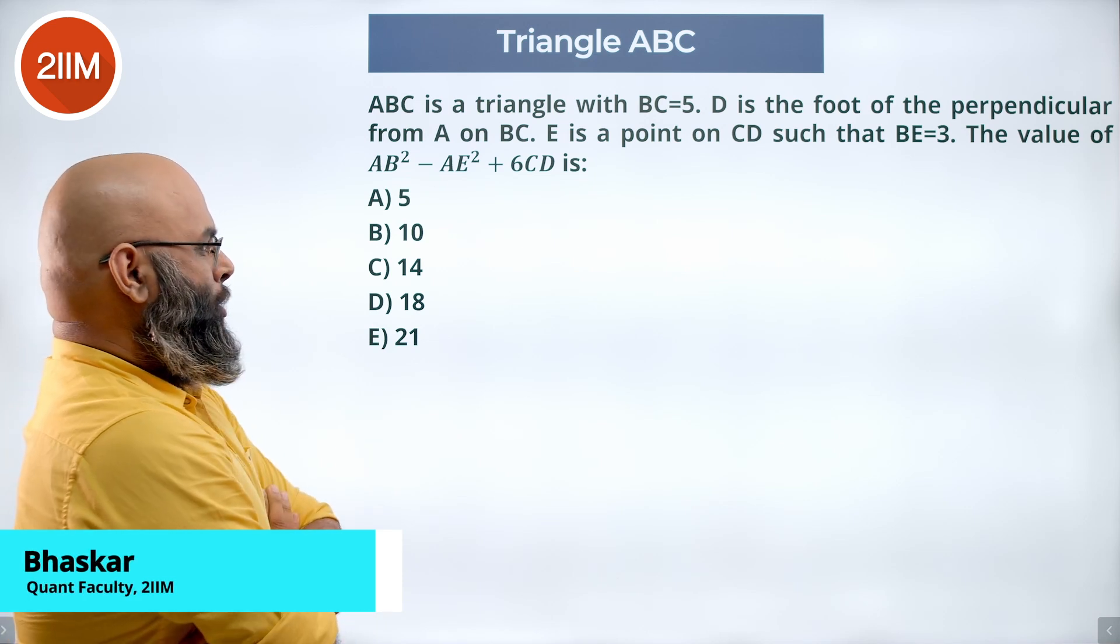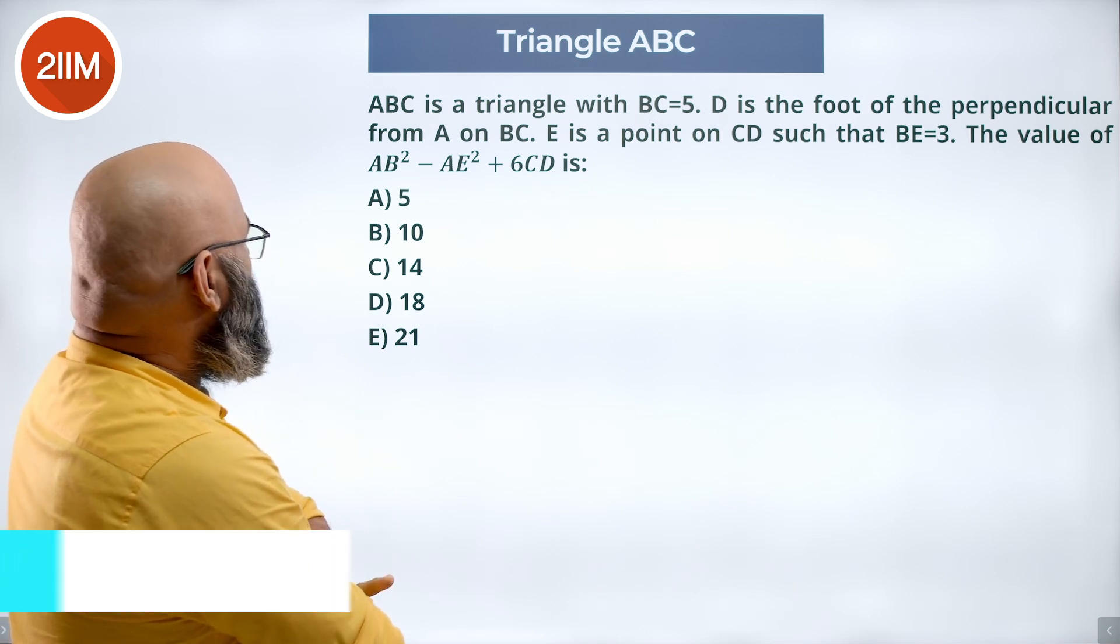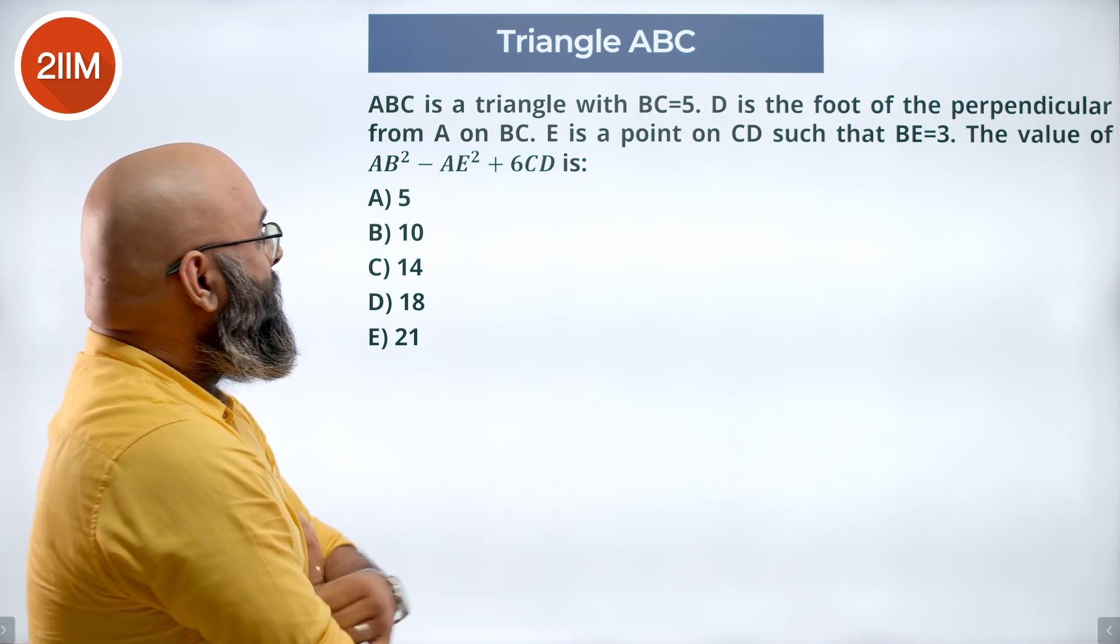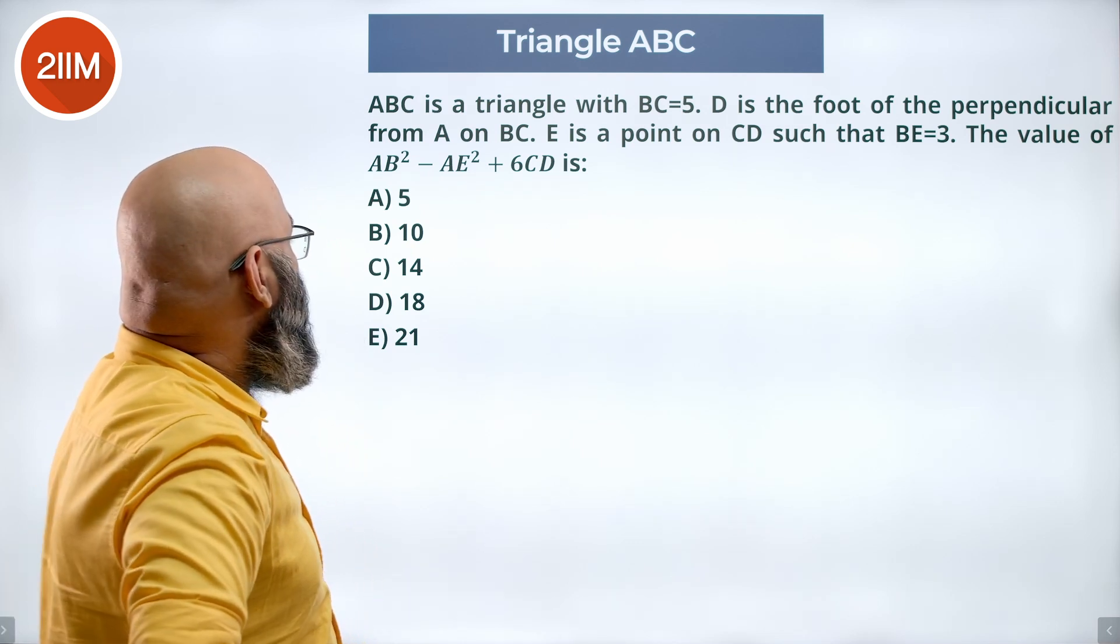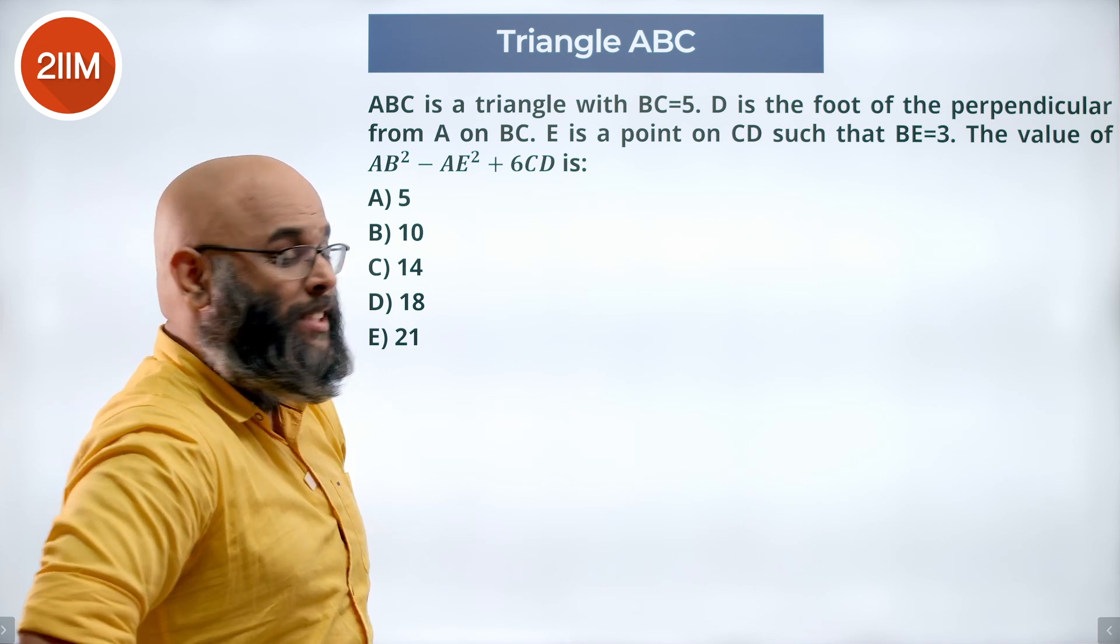ABC is a triangle with BC equal to 5. D is the foot of the perpendicular from A on BC. E is a point on CD such that BE is equal to 3. The value of AB square minus AE square plus 6CD is: